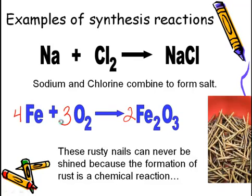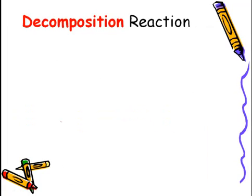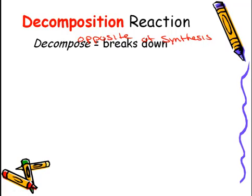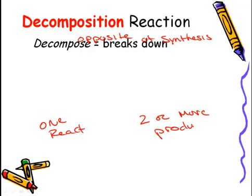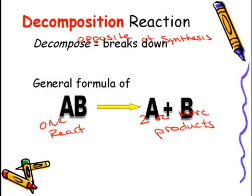Our second type of reaction is a decomposition reaction. This is the opposite of a synthesis. In a synthesis reaction, we had multiple reactants and a single product. Here, we're going to decompose, or break down. So we're going to have one reactant, and it's going to form two or more products.